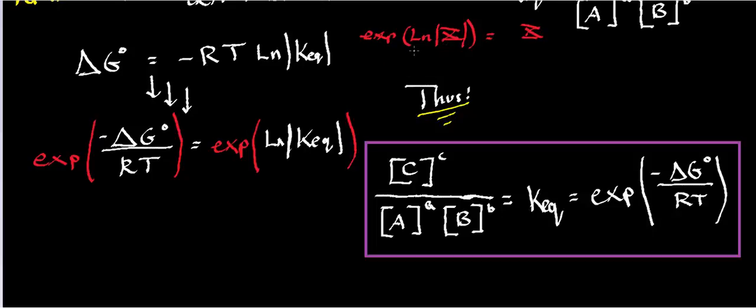So if I want to isolate the equilibrium constant, I need to somehow take the exponential of the logarithm. But I want to get rid of the RT first and the negative sign. So what I'm going to do is I have this delta G standard equal negative RT times the natural log. I'm going to divide both sides through by negative RT. So that's going to give me this term right here, negative delta G standard divided by RT is equal to the natural log of the equilibrium constant.